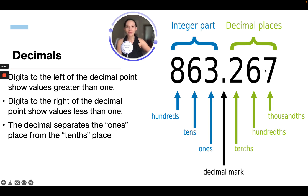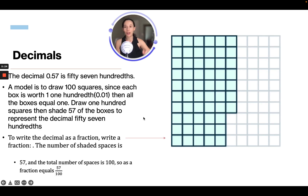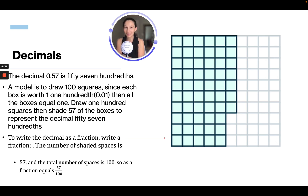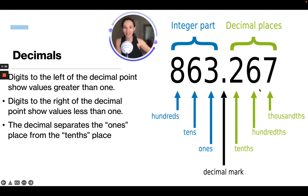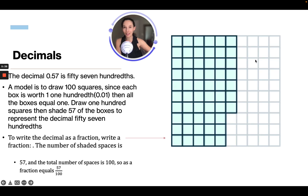You may see questions that say round to the nearest tenths — that would be the first place after the decimal point, not the tens place. Remember, after the decimal point comes the tenths place first. So the decimal 0.57 is 57 hundredths. Hundredths is the second spot after the decimal — we have our tenths and our hundredths.